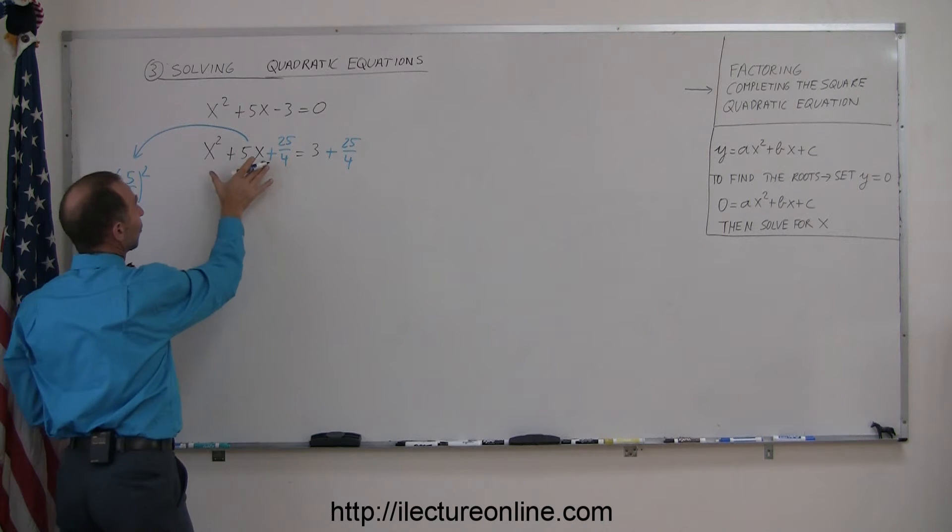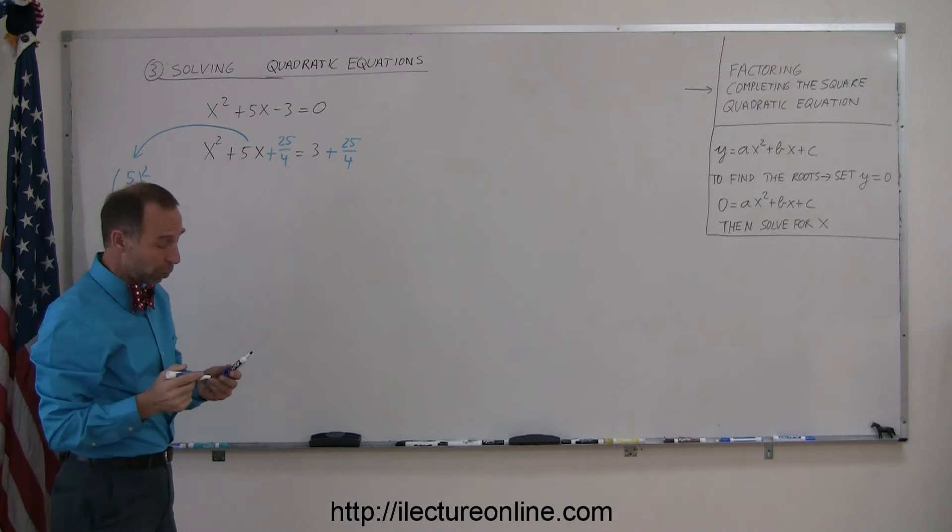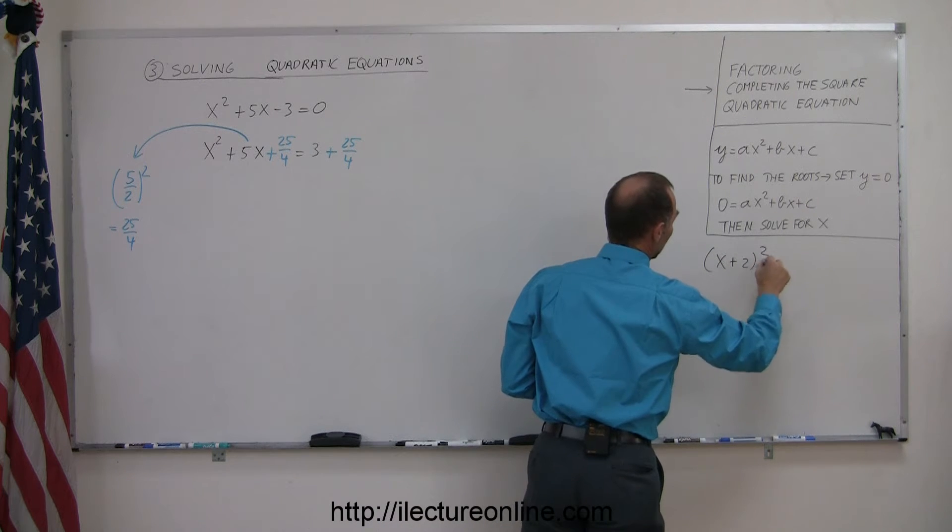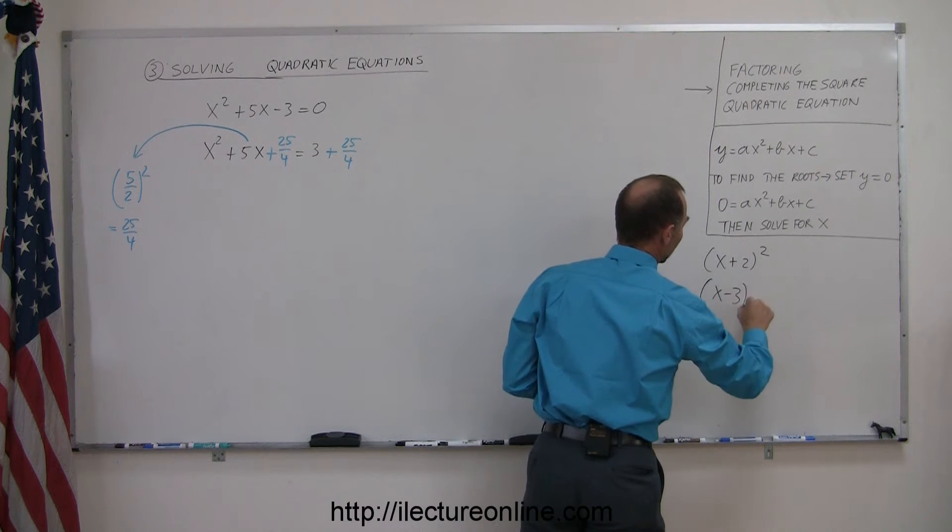we've ensured that this is a perfect square of some sort of binomial that looks perhaps like x plus 2 squared, or x minus 3 squared, or something like that.